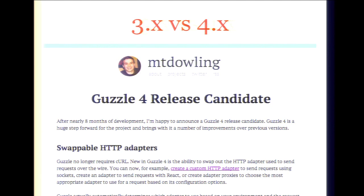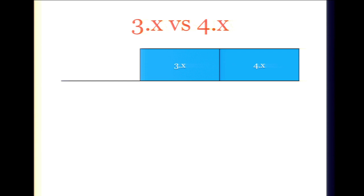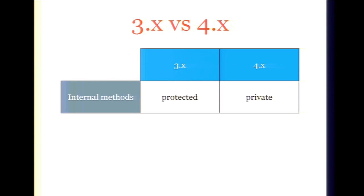In Guzzle 3, all implementation details were mostly protected methods and properties. I don't like that — it makes code hard to evolve and maintain, because making something protected is basically a statement that it's part of the public API, since subclasses can rely on it. By changing implementation details to private and only making things protected when I explicitly designed that extension point, it makes extension points more explicit and easier to maintain. People rely on the API, and you focus on collaboration and composition rather than inheritance, which makes for a better product.